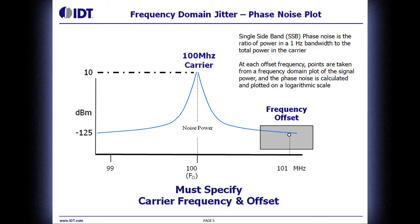So if we look at this frequency domain jitter, we'll map it out in what we call a phase noise plot, represented here. This is a specific example of a 100 megahertz carrier frequency — the peak centered in the middle of the graph. On specific applications, engineers may or may not care about this entire graph. In high-speed datacoms, which is a huge growing segment for these devices, they're only going to look at a very small portion of that graph, represented by that gray box on the right. That box represents a frequency offset range from the 100 megahertz carrier — also called a frequency offset mask, or jitter mask.